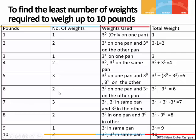For 6 pounds, two weights: 3 to the power 2 on one pan and 3 to the power 1 on the other, giving 9 minus 3 equals 6. For 7, three weights: 3 to the power 2 and 3 to the power 0 on one pan, and 3 to the power 1 on the other. For 8, three weights: 3 to the power 2 on one pan and 3 to the power 1 and 3 to the power 0 on the other. For 9, one single weight — 3 squared. For 10, two weights: 3 to the power 0 and 3 to the power 2 on the same pan, giving 10.